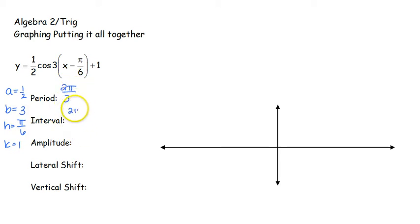To find our interval, we take that and we divide it by 4. Remember, so important that you are remembering how to divide fractions. When we divide those out, we end up with our interval of π over 6.